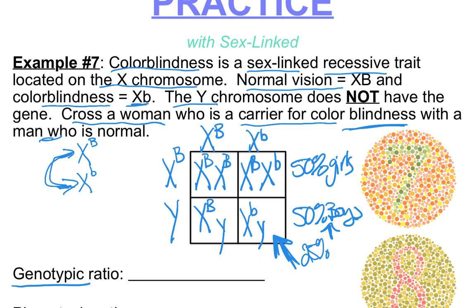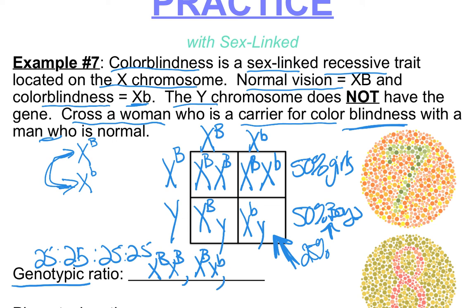The genotypic ratio is 25:25:25:25 — offspring are either X uppercase B / X uppercase B (normal-vision girls), X uppercase B / X lowercase b (carrier girls), X uppercase B / Y (normal-vision boys), or X lowercase b / Y (colorblind boys). All girls will have normal vision, but half of them will be carriers. Fifty percent of the boys will be colorblind.